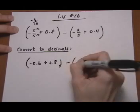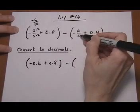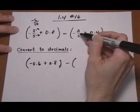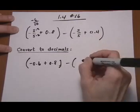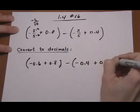Take away minus 2 fifths. Again, try to make 10, 100, or 1,000 on the denominator, or plug it into your calculator. 2 divided by 5. That's going to give us minus 0.4 plus 0.4.